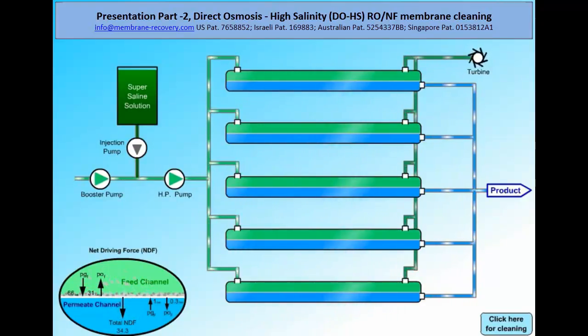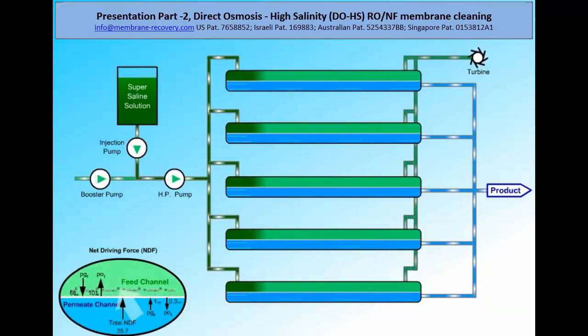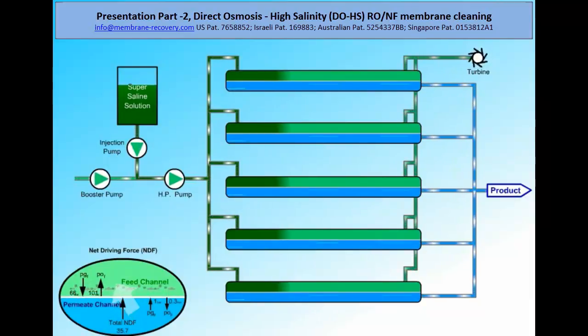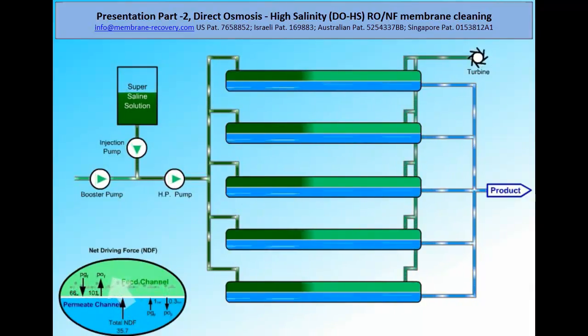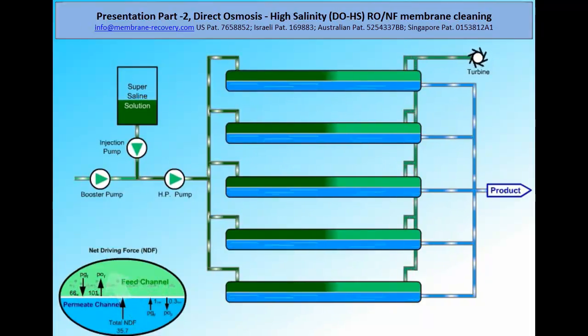Let's start with the direct osmosis cleaning. When the pump and RO train are in normal operation, a few gallons of concentrated table salt are injected into the suction site of a high-pressure pump. 30 seconds is the maximum injection time used for seawater application. For brackish water, it'll be between 5 to 15 seconds only.